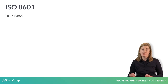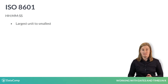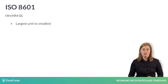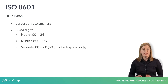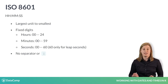ISO 8601 also has something to say about date-times. Just like dates, if you have an accompanying time, it should be written from largest unit to smallest unit using a fixed number of digits, and optionally separating the units with a colon. When combined with a date, the time is sometimes prefixed with the character T.